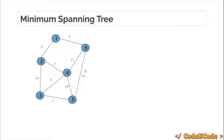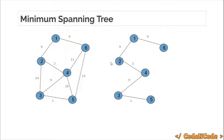You have to find the minimum spanning tree of this graph. That is, you have to make a tree by removing some of the edges such that the sum of the edges of the tree is minimum. Of course the graph must remain connected after removing the edges. If you see, this is the minimum spanning tree of this graph.